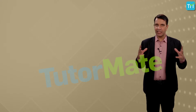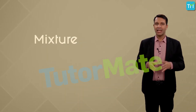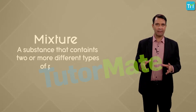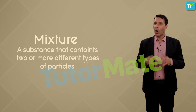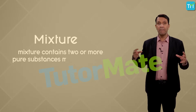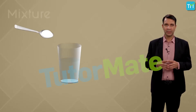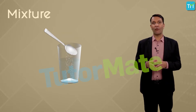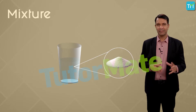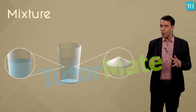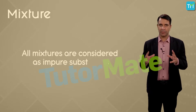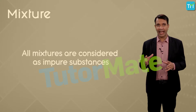Now coming to the other type of matter: mixtures. A mixture is a substance that contains two or more different types of particles. Alternatively, a mixture contains two or more pure substances mixed together. A salt solution is one such example of a mixture, as it is made up of two components: salt and water. Always remember that all mixtures are considered impure substances as they contain more than one kind of particle.